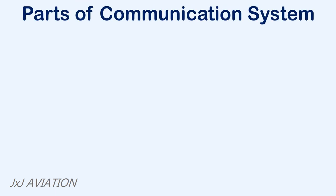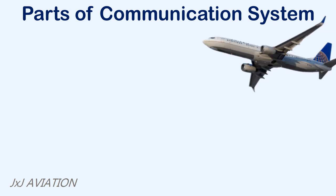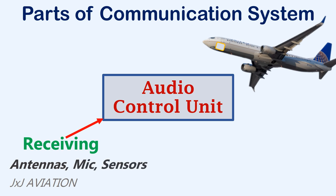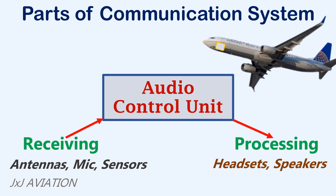Now, let's look at the parts that are required for audio communication in an aircraft. The communication system is centrally managed by an audio control unit. This unit is responsible for receiving information from different antennas, microphones and sensors. It is then responsible for processing this information and transmitting them to specific locations such as headsets or speakers in the cockpit or in the cabin.